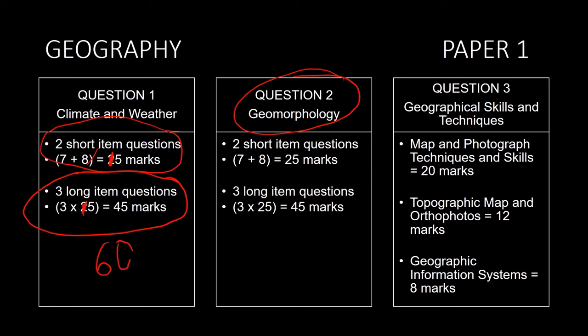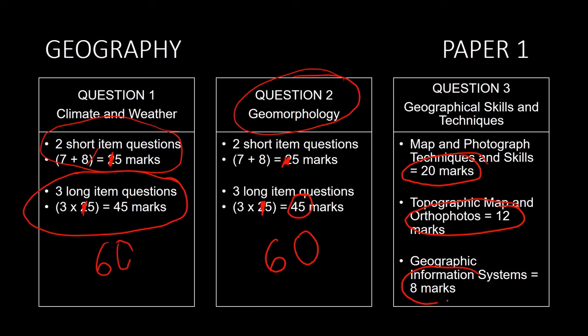In question 2, geomorphology, again 2 short item questions — one 7 and one 8 mark question — make up 15 marks. There are 3 long item questions using a variety of resources, made up of 3 times 15 mark questions, giving a total of 45. Hence the total for question 2 is 60 marks. For geographical skills and techniques, map work calculations are 20 marks, map work applications are 12 marks, and GIS is 8 marks, giving a total for question 3 of 30. Hence the total for this examination is 150.